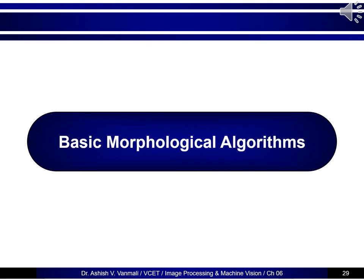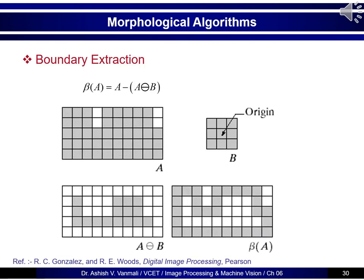Now that we understand the basic morphological operations — dilation, erosion, opening, closing, and Hit and Miss Transform — let's move to their applications. One of the simplest algorithms in morphology is boundary extraction. The boundary of object A, denoted β(A), is given by A minus (A ⊖ B). We erode A with B and subtract the result from A to get the boundary. A 3×3 all-ones structuring element B is normally used for boundary extraction.